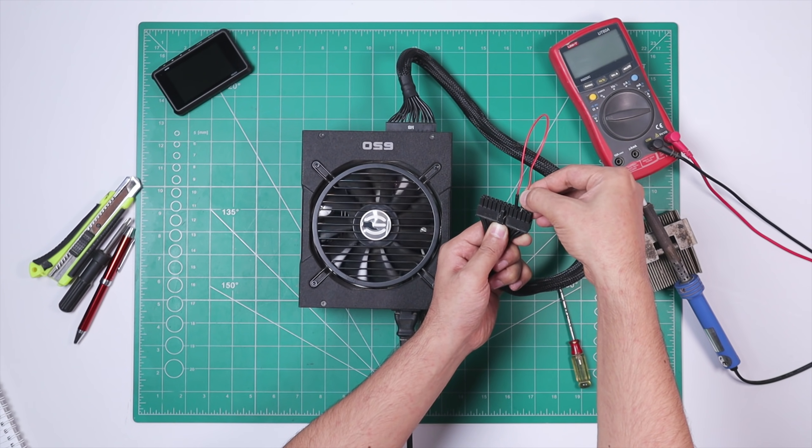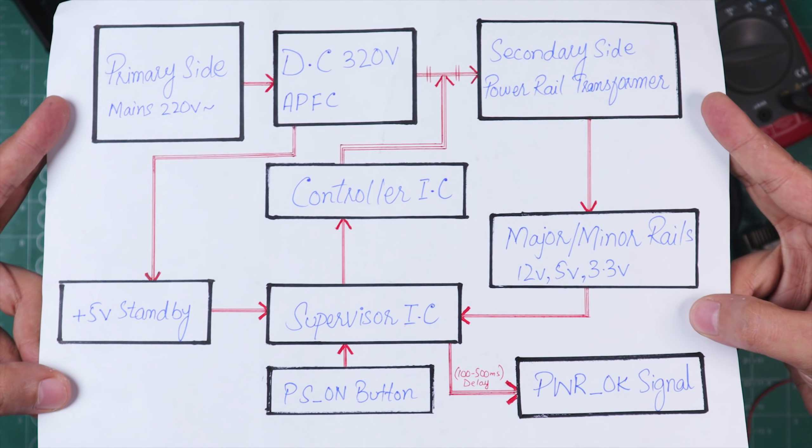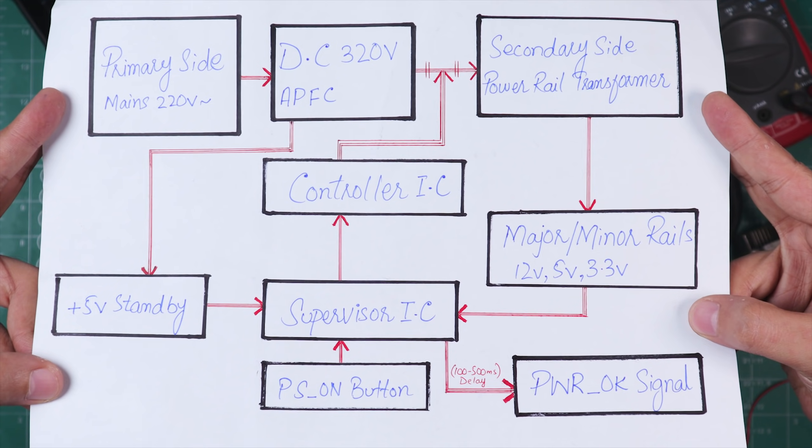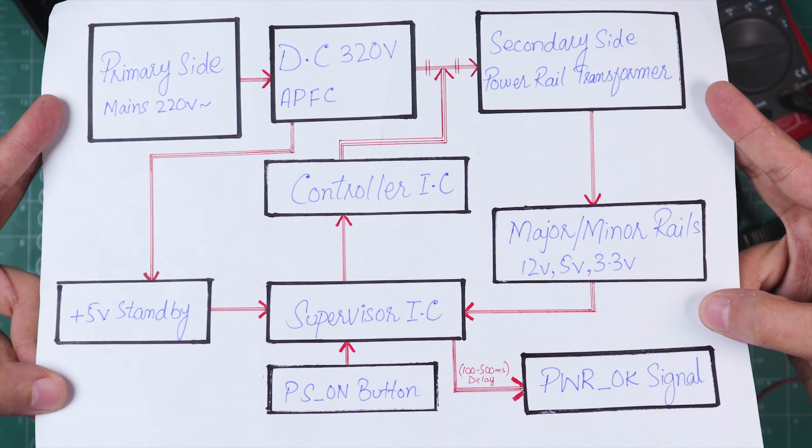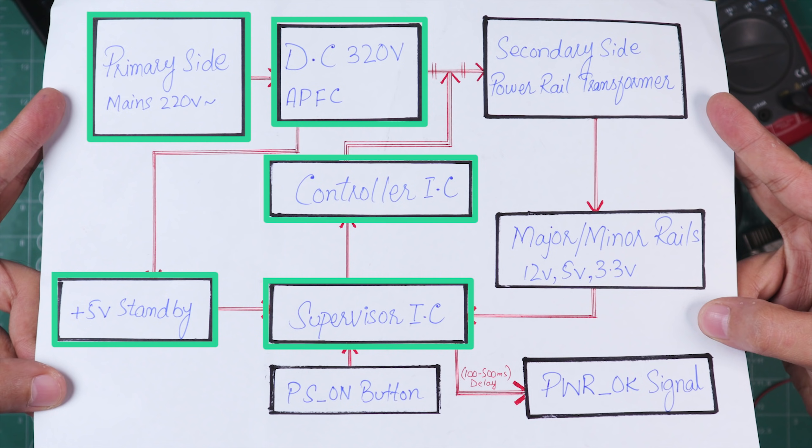And in order to find out what exactly is happening in this power supply, I've made this very brief and rough sketch of how a power supply actually works so that you can easily understand where exactly do we have the problem. So the first part is where our mains 220 volts AC comes in and then it gets converted to 320 to 400 volts DC. Now this DC then powers 5 volts standby transformer that provides 5 volts to supervisor IC, and this IC sends the signal to a PWM controller which then turns on the secondary side transformer where we get our 12, 5, and 3.3 volts power rails.